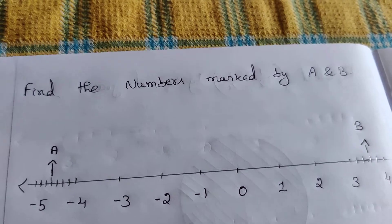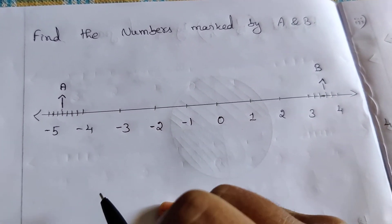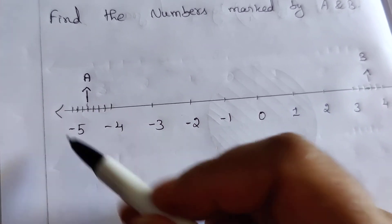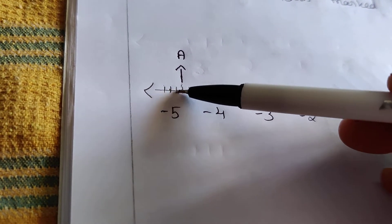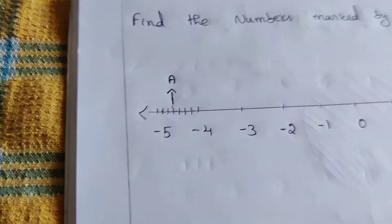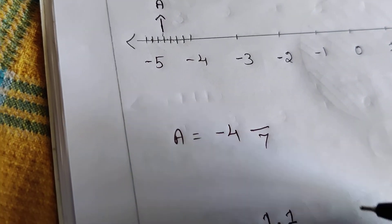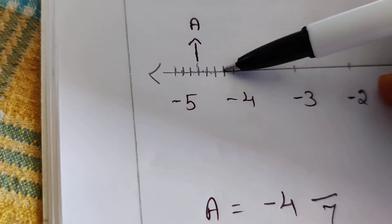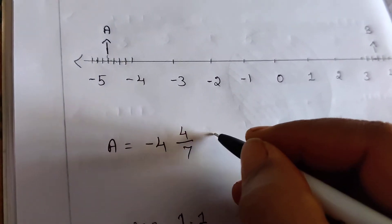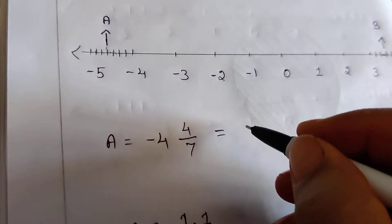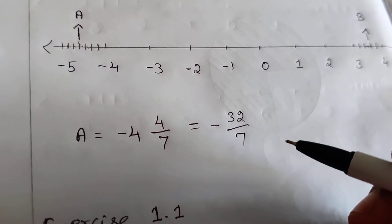Let's look at this example: find the numbers marked by A and B. A will be between minus 4 and minus 5. Let's look at how many parts there are: 1, 2, 3, 4, 5, 6, 7 — 7 equal parts. So minus 4 will have 7 equal parts. A will be minus 4. We go to the number 4, then make it minus 4. Now this is the 4th line — A is the correct value.